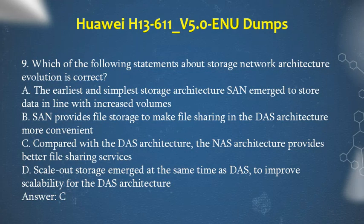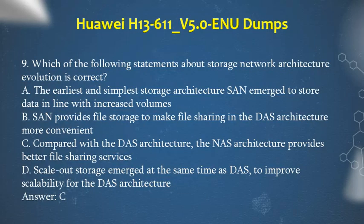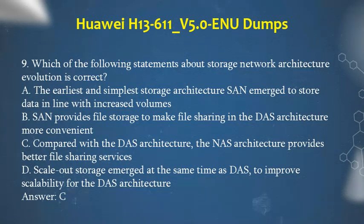Question 9: Which of the following statements about storage network architecture evolution is correct? a. The earliest and simplest storage architecture SAN emerged to store data in line with increased volumes. b. SAN provides file storage to make file sharing in the DAS architecture more convenient. c. Compared with the DAS architecture, the NAS architecture provides better file sharing services. d. Scale-out storage emerged at the same time as DAS to improve scalability. Answer: c.